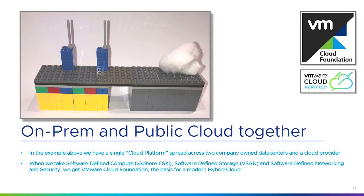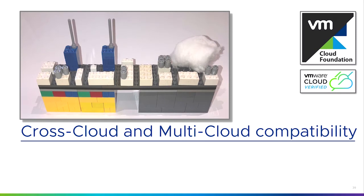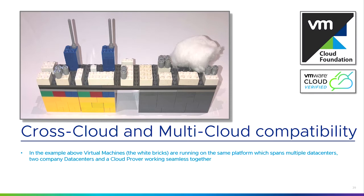When we take vSphere, vSAN, and NSX, we get Cloud Foundation — that grey strip across the top where we run applications and services. Cloud Foundation is an operating system for running virtual machines across data centers and clouds. I can take all of my applications and services and spread them between my data centers and one or multiple cloud providers. Because it's the same platform, using the same management console, the same configuration settings, and the same policies, it doesn't matter where those servers are physically located — it just looks like a single platform distributed across different locations. You can also see smaller containers running on top of the VMs — the little grey things — which we'll come to next.